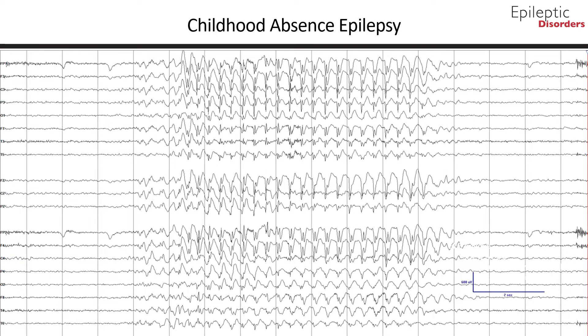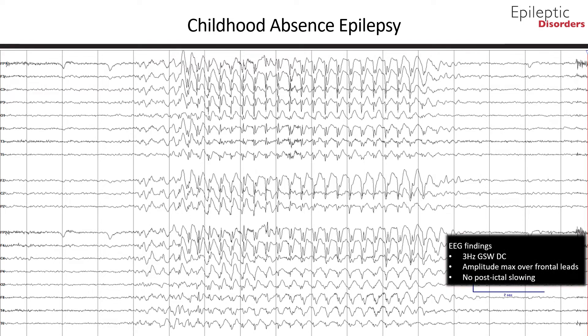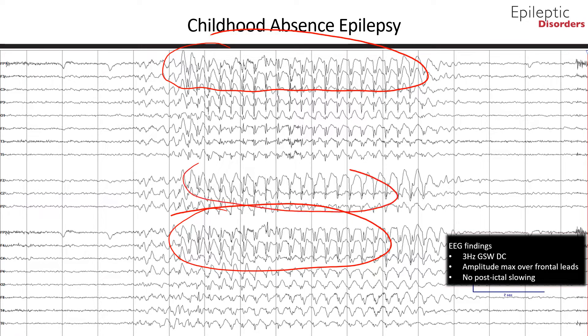This is a CS2 reference montage of the same 7-year-old boy with typical childhood absence epilepsy. Note the generalized rhythmic high-amplitude 3 Hz discharges that have maximal amplitude over the frontal regions. Again, note the lack of aftergoing post-ictal slowing after the 3 Hz complexes.